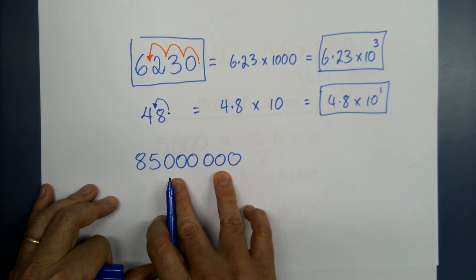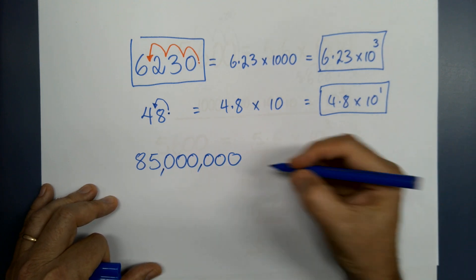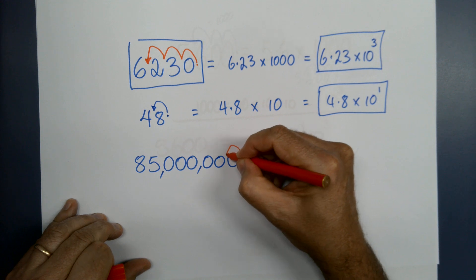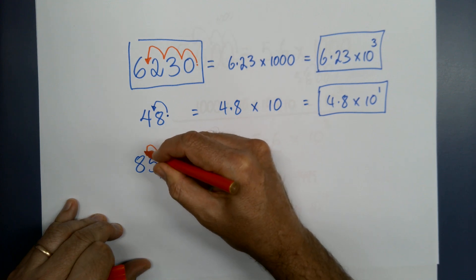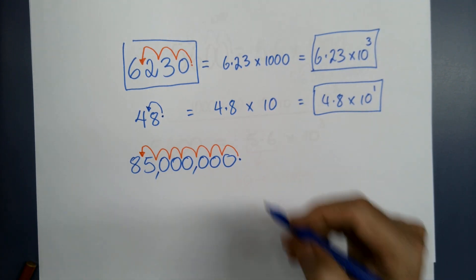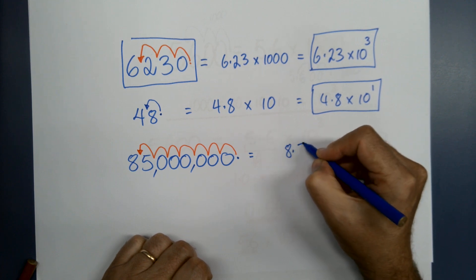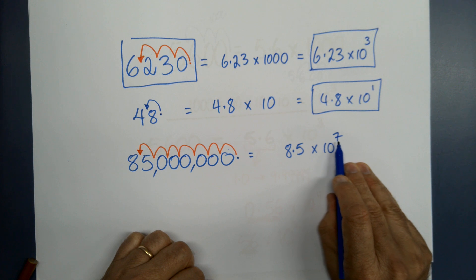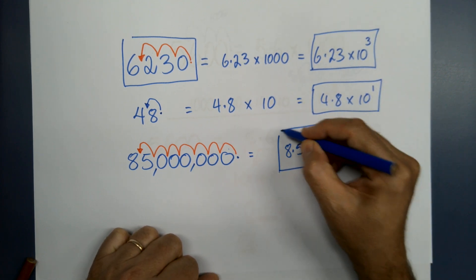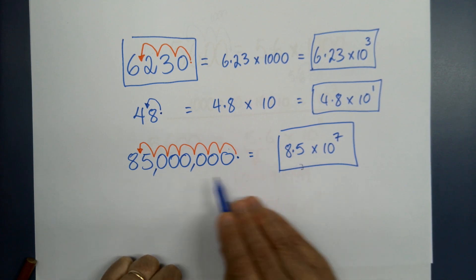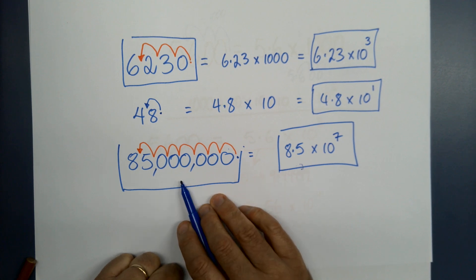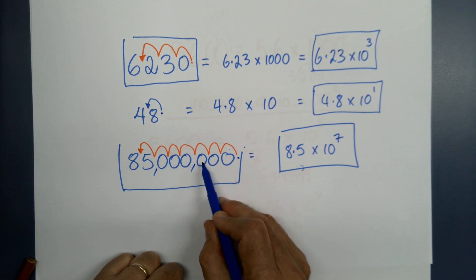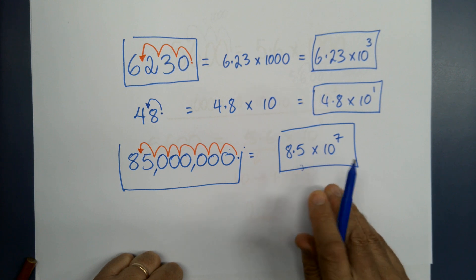This is really the kind of thing we use this for. I've got 85 million — there's my decimal place, and I want to shift it all the way over to after the 8. One, two, three, four, five, six, seven — that's seven decimal places. So that is 8.5 times ten to the seven. The number of jumps is the power on the ten. Writing that is a lot easier than writing 85,000,000 — it's clumsy, takes up more room, and you can easily add or leave out a zero. This is far more foolproof.